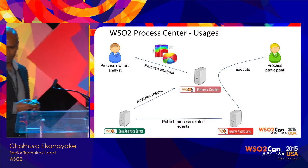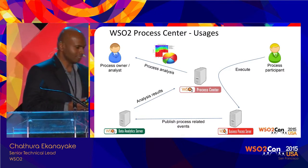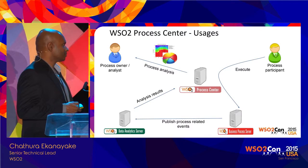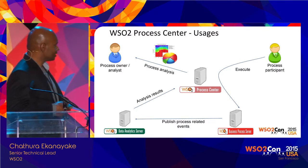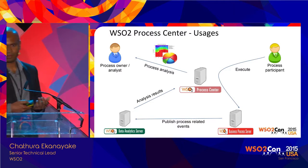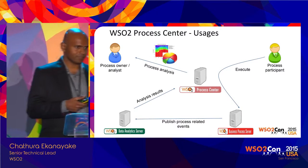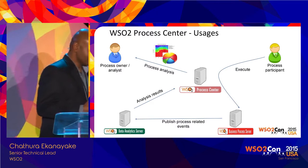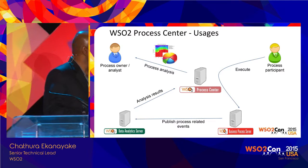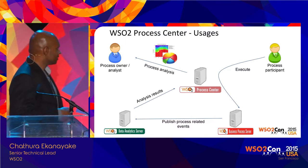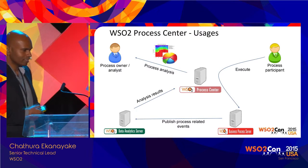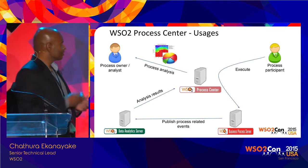That is one functionality of the process centre. Now there is another part — process analysis. Once we have a process collection and some processes automated and deployed, we can collect process-related events from the executing processes. If a process is executing in a process server, we can get events from that. Even if it is not, some parts of those processes are running in IT systems or devices, so we can collect events from them. We push all those events to the data analytics server associated with the process centre and generate analysis results and dashboards to understand process behaviour.